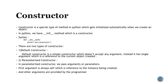A constructor is a special type of method in Python which gets called automatically when we create an object. It is used for initializing your object. In Python we have the __init__ method which is the constructor. The syntax is: def __init__(self, ...) and you pass self — although you can write any other word, usually self is written. Inside, you write whatever you want in the constructor.